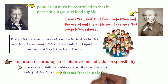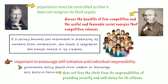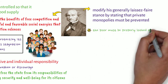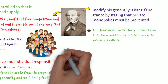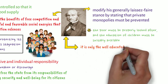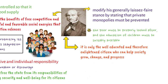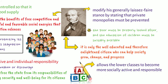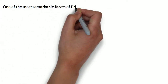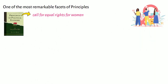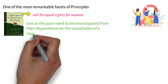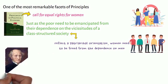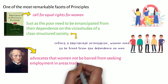Although this does not free the state from its responsibilities of providing security and well-being for its citizens, Mill does modify his generally laissez-faire stance by stating that private monopolies must be prevented, the poor must be properly looked after, and the education of children must be suitably available. Mill firmly believes that it is only the well-educated and therefore enlightened citizen who can help society grow, change, and progress. Moreover, education allows the lower classes to become more socially active and responsible. One of the most remarkable facets of Principles is its call for equal rights for women. Just as the poor need to be emancipated from their dependence on the vicissitudes of a class-structured society, which reflect a patriarchal orientation, women need to be freed from the dependence on men. Thus, Mill advocates that women not be barred from seeking employment in areas traditionally the preserve of men.